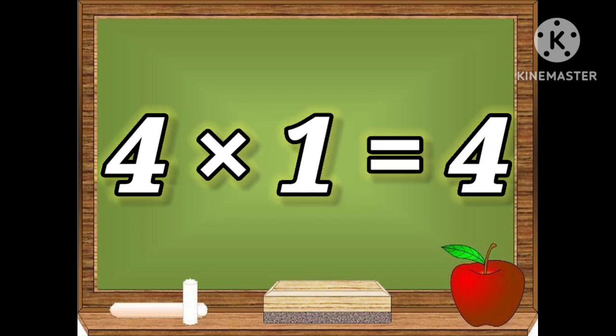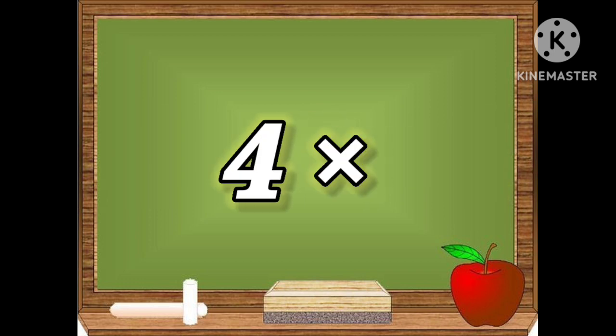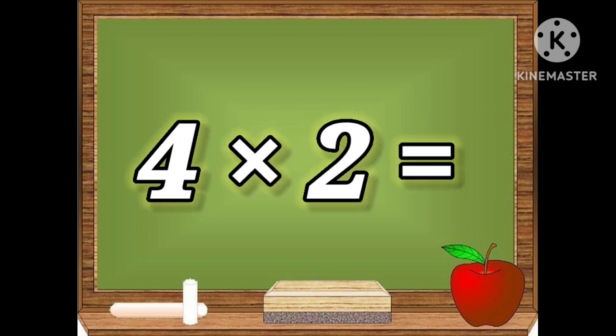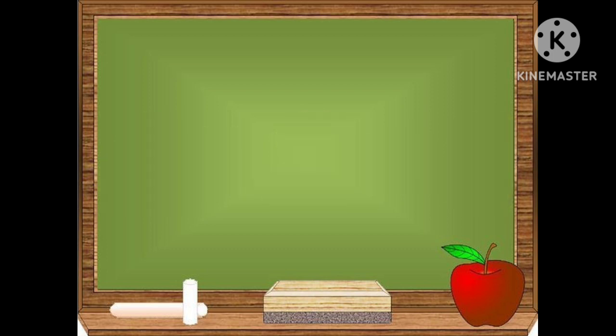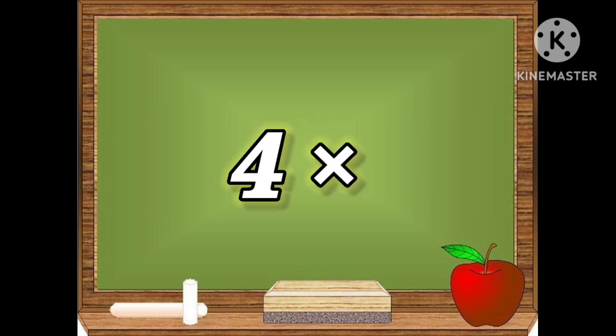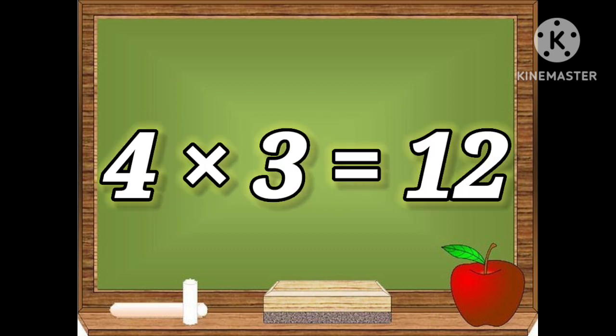Four ones are four. Four twos are eight. Four threes are twelve.